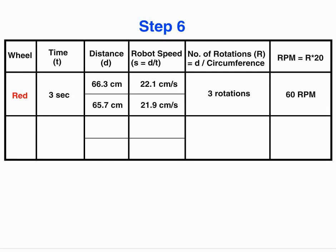This is how I calculate the speed of the motor. You can see the speed of the motor is different than the robot speed. Now we will perform the same experiment for yellow wheel and write down the readings.